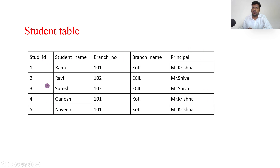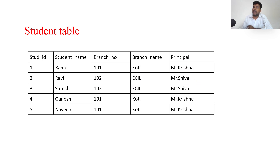For example, consider a student table with student ID, student name, and branch number. After branch number, there is a branch name and principal name which repeat again and again. For example, assuming only two branches: branch 101 is Koti with principal Mr. Krishna, and branch 102 is ECL with principal Shiva. Every time we enter a student's details, we must also enter the branch name and principal — this is repetition of data.